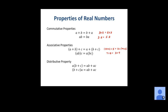The distributive property says if we have a real number multiplied by a sum or difference, we can multiply that number on the outside by each of the terms on the inside. So a times (b + c) gives us ab + ac. Whether the number is at the front or the end, we distribute a times b and a times c to get that same result ab + ac.